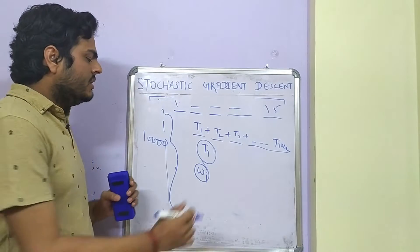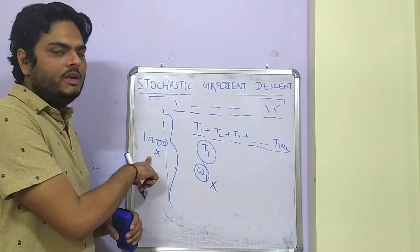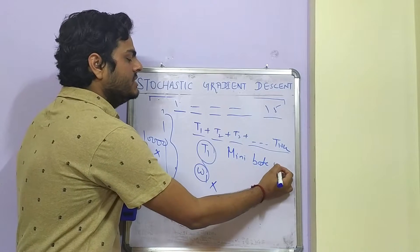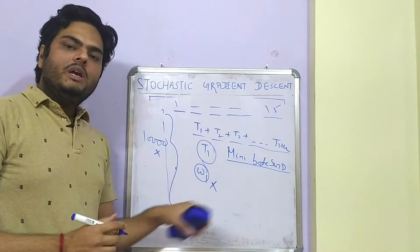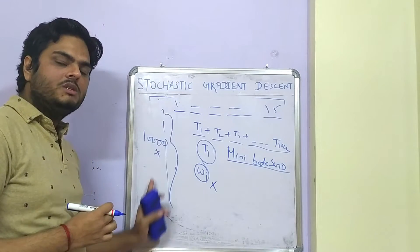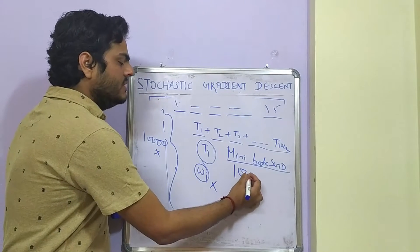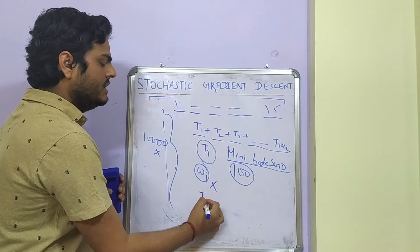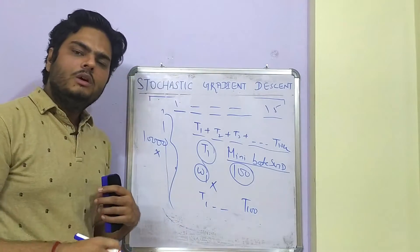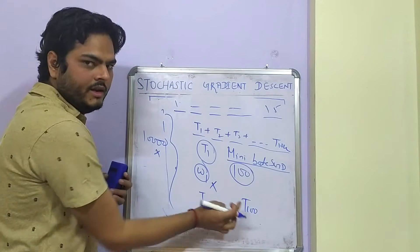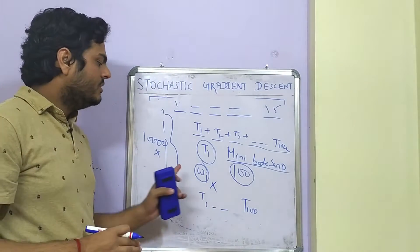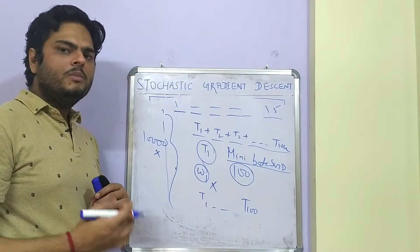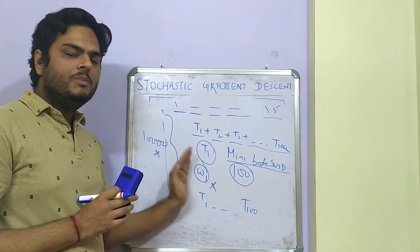We cannot take one record, and taking 10,000 is computationally expensive. So there is something called mini-batch gradient descent. What it does is take a batch of records from the 10,000 — let's say 100 records, setting batch size as 100. Then in the loss function you only see T1 to T100, reducing computation from 10,000 to 100 terms. At the same time, when 100 records are selected at random, there is less possibility of the result being biased.